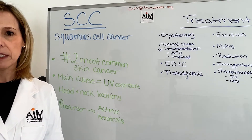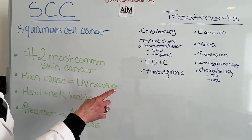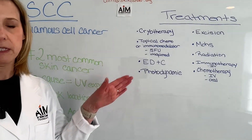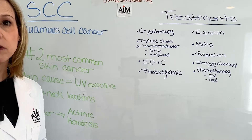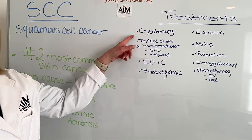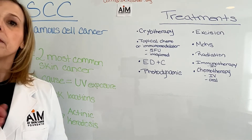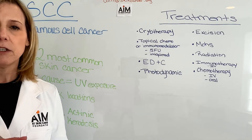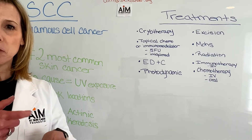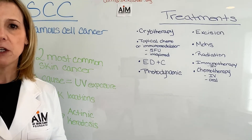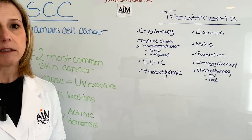Moving on to treatments — there are many treatments for squamous cell carcinomas. Some of these are also treatments for actinic keratosis, which is the precursor lesion. Cryotherapy is a common treatment for actinic keratosis or squamous cells, and this involves liquid nitrogen used to freeze one of the rough areas. If you go into your dermatologist's office and they come out with that little gun where they freeze spots, that is known as cryotherapy, or freezing.